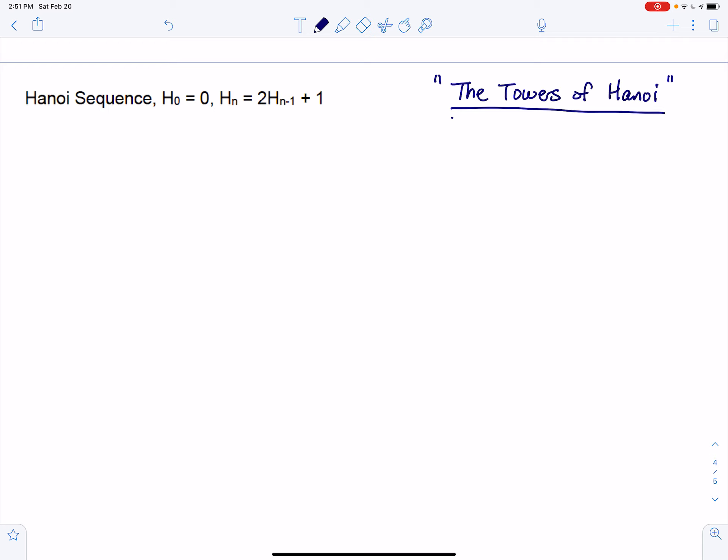So the first thing I'm going to do is try to get a formula for H sub n. Let's do this with the naive approach again, which means just plugging in numbers and seeing if we can find a pattern.